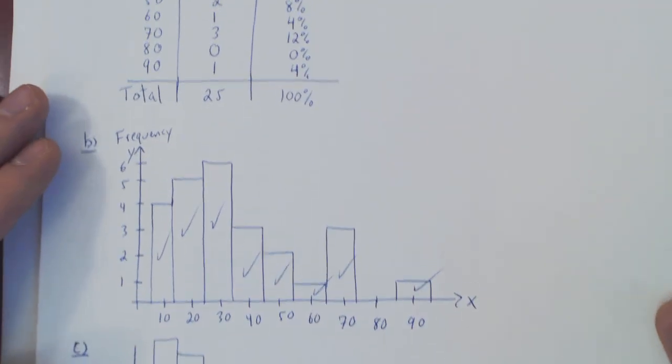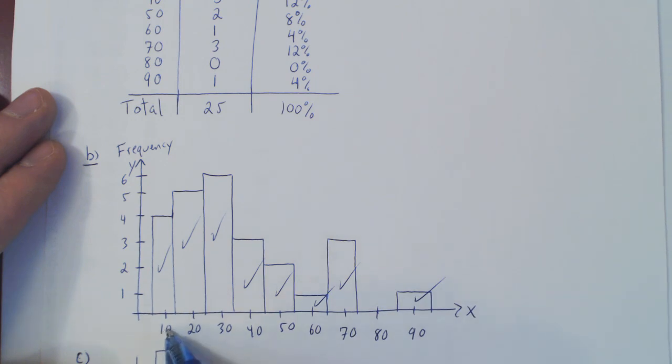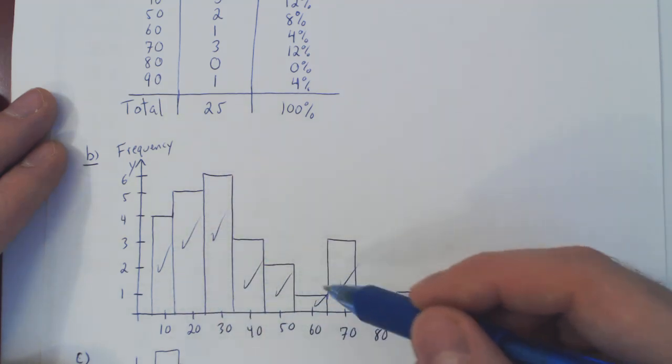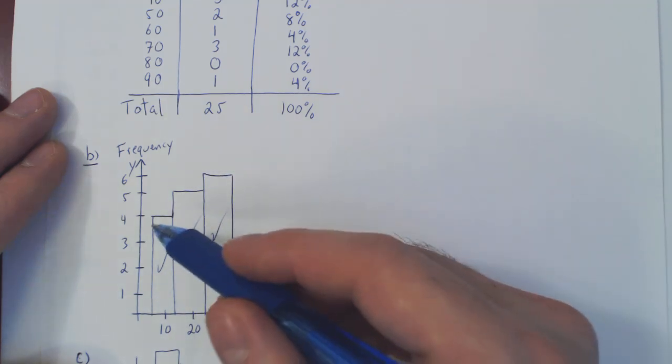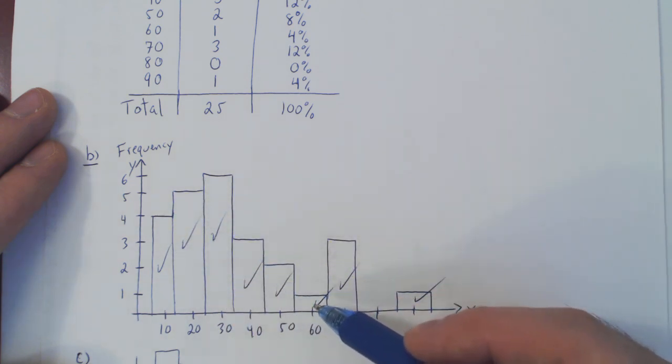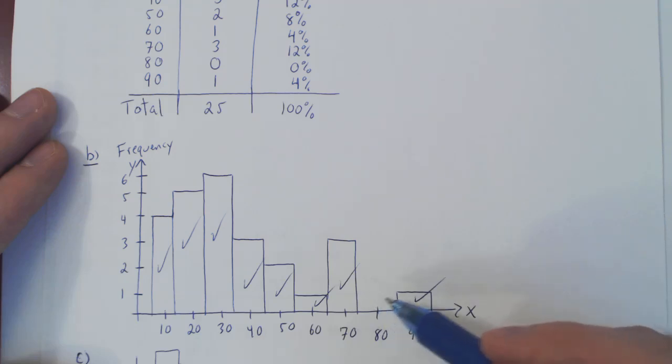So look at the bar graph for now: 10, 20, 30, 40, 50, 60, 70, 80, 90, your categories. And each bar gives you the frequency for that given age group: 4, 5, 6, 3, 2, 1, 3, 0, 1.